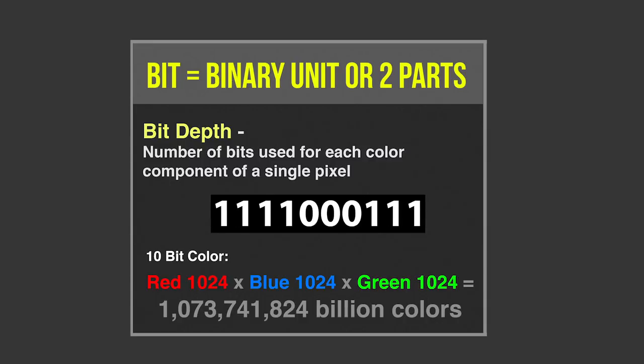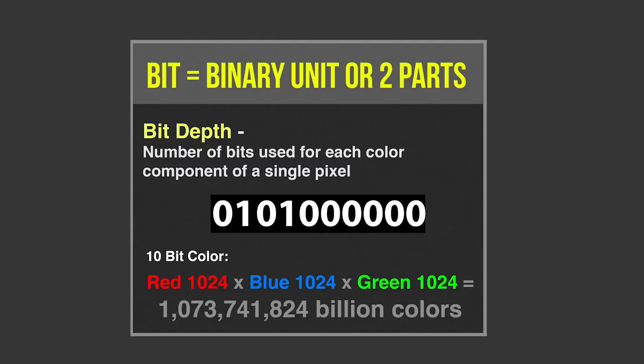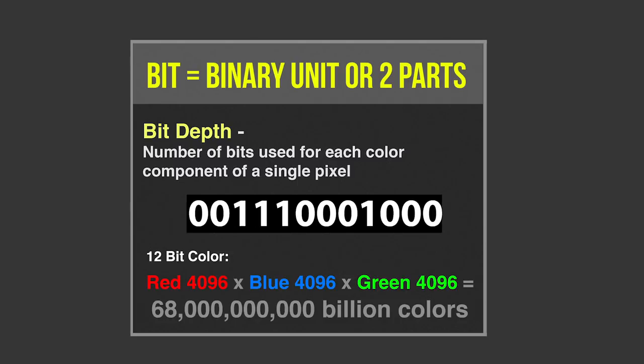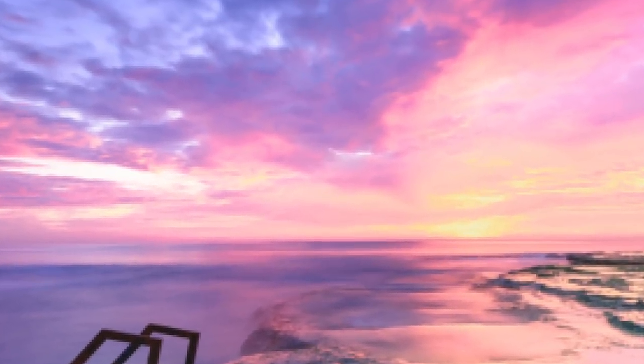Ten-bit means there are 10 binary units, and if we do all the math, there are approximately a billion different colors. Twelve-bit means approximately 68 billion different colors. Why is this important? Sometimes when we're shooting, if we get into a situation with a strange color like a sky, there aren't enough shades in the file to determine the appropriate color and we start to see artifacts. If you had to do a lot of color grading, would you want a raw file or a JPEG? It's a no-brainer — you want a raw file. You can definitely grade a JPEG image, but there's a lot more color and brightness information in raw files, making the raw file far more flexible in terms of grading.